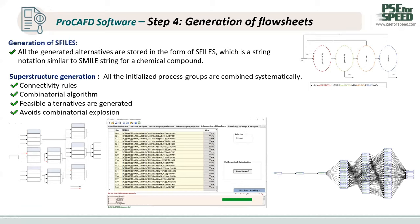For step four, the generation of flow sheets, the program will use the information from the process group and create the flow sheet systematically based on the connectivity loop, just like atom and monotone. The program will generate possible flow sheets and store them in the form of the S file, which is a string notation similar to SMILES for chemical compounds. The program will list alternatives in a table, and the user can click Open Super Structure to generate the superstructure of all alternatives, or click View to observe each flow sheet in the ICAST program. Then we click Next to step five.